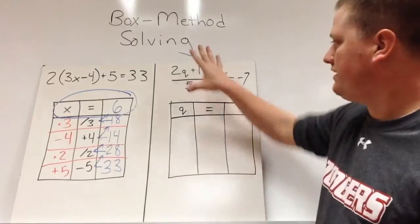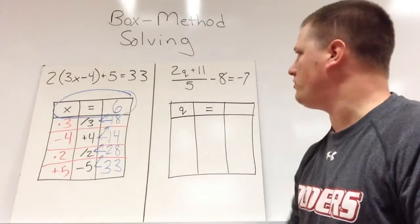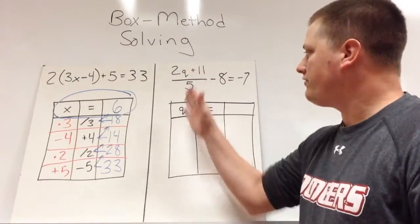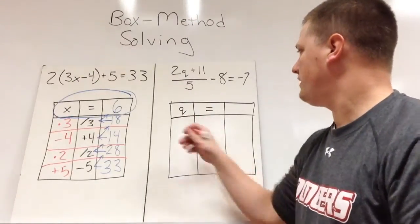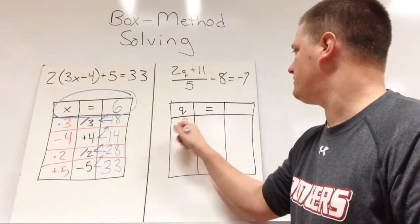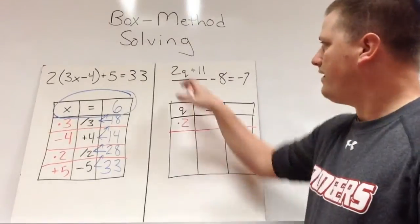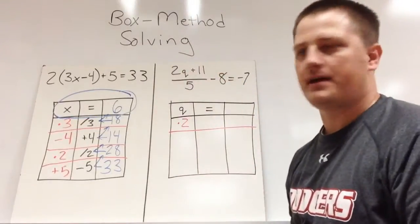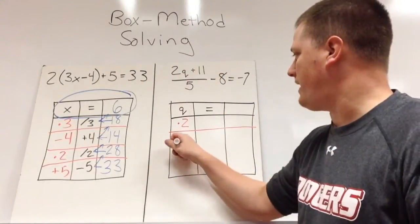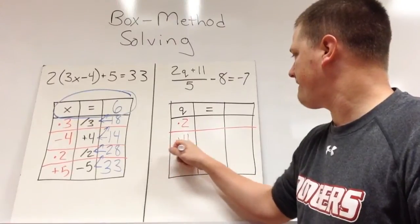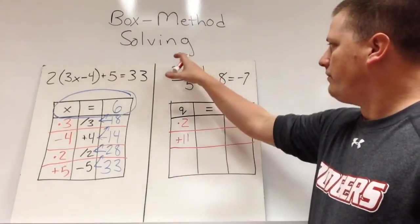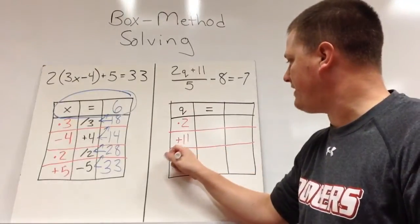Our next version is for Q. We want to solve this one for Q because that's our unknown. So the first thing that we would do to Q is we would times by two. Then because it's on top of the division bar here we would have to add eleven. We would then have one number on top we would divide by five.